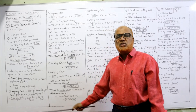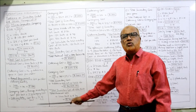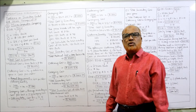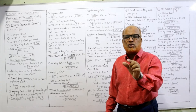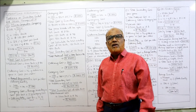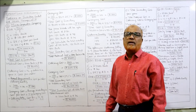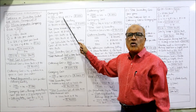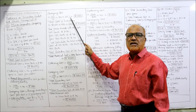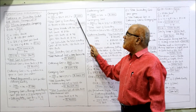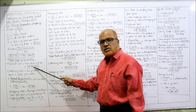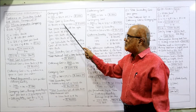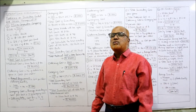Carrying cost = average inventory × cost per unit × percentage of carrying cost. Average inventory = ordering quantity ÷ 2 = 100 ÷ 2 = 50. Carrying cost = 50 × 80 × 25% = 1,000 rupees. Total inventory cost = 80,000 (material) + 1,000 (ordering) + 1,000 (carrying) = 82,000 rupees. First part complete.